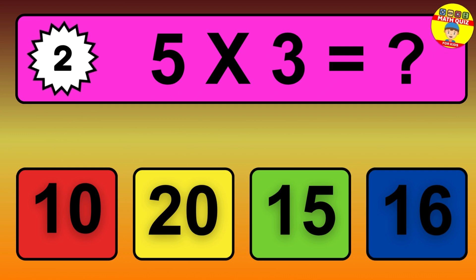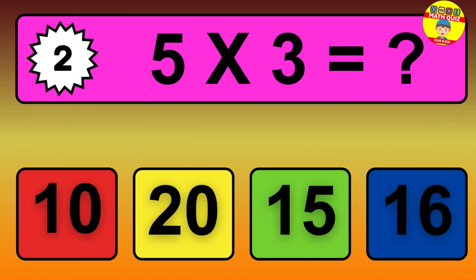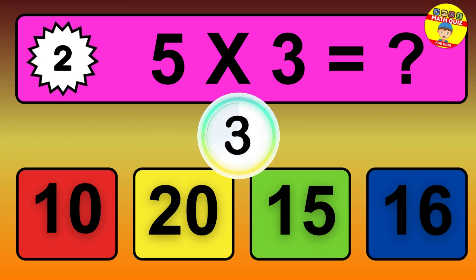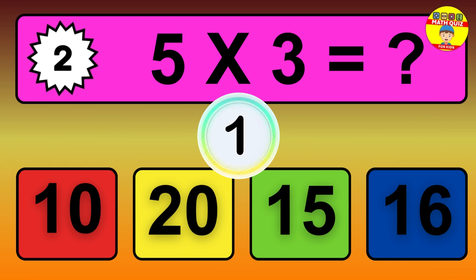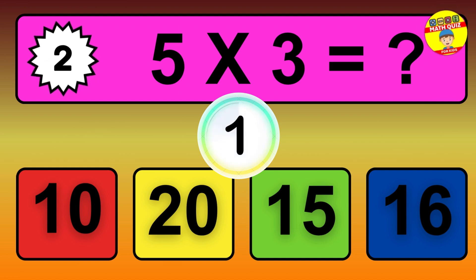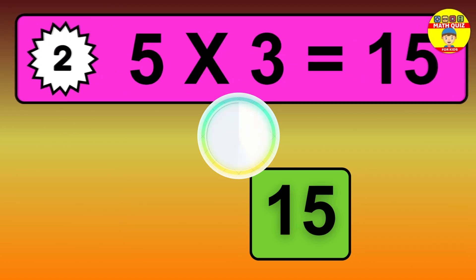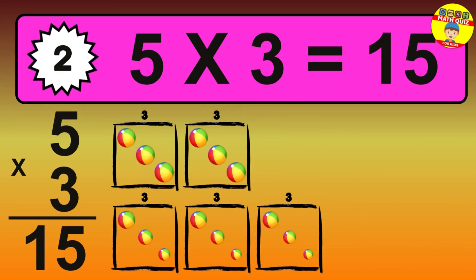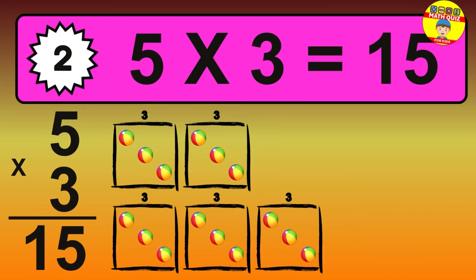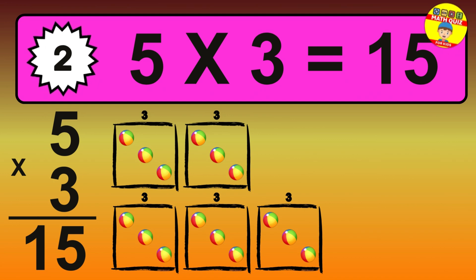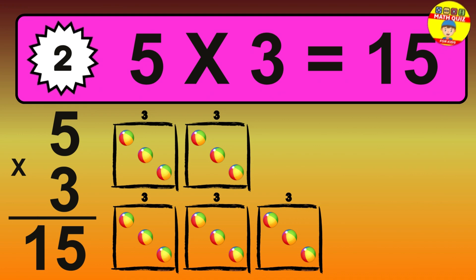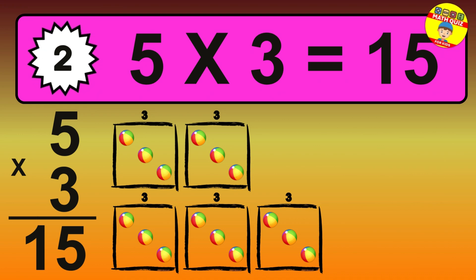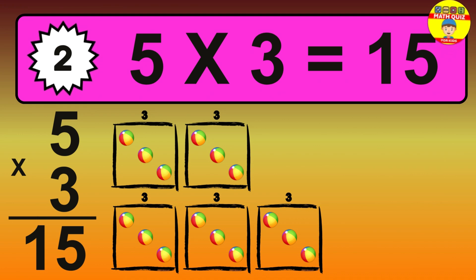Question 2. 5 times 3 equals what? The answer is 5 times 3 is 15. To calculate, we have 5 groups with 3 balls each. So how many balls do we have? 15 balls.